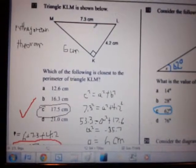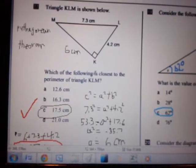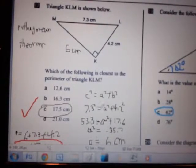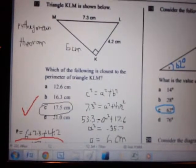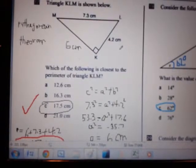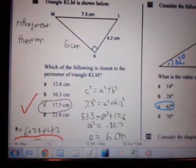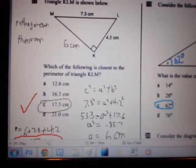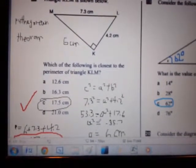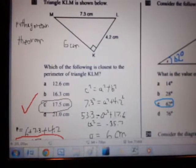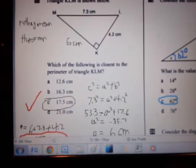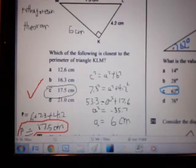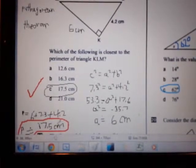The hypotenuse is 7.3 centimeters, so we have 7.3 squared equals A squared, which is the unknown length, plus 4.2 squared, which is the known length. Isolate A squared from these two known lengths. You get A squared equals 35.65. Square root of that, A equals 6 centimeters approximately. So 6 plus 7.3 plus 4.2 gives you 17.5 centimeters as your perimeter for triangle KLM.